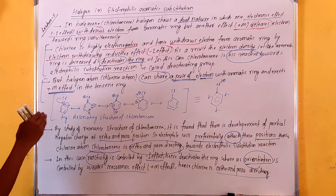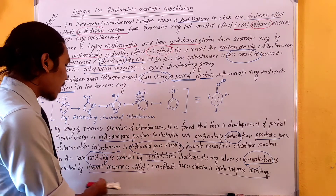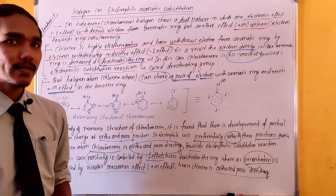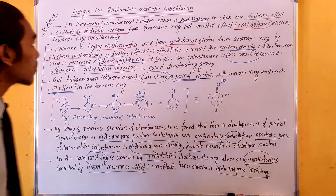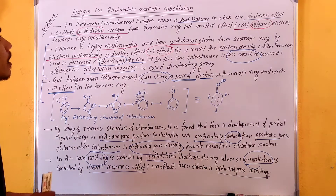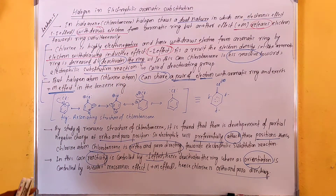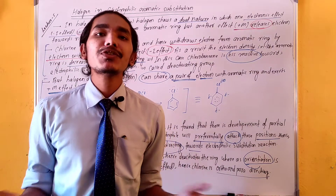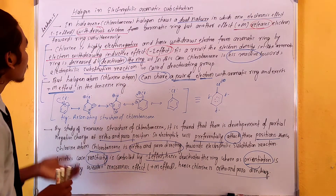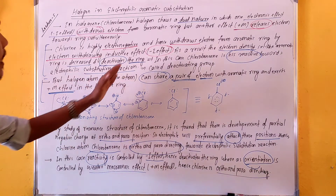In halogen atoms, there are electronic effects that affect ring stability and reactivity. Chlorine is highly electronegative and hence withdraws electrons via the minus I effect, deactivating the ring. This is what we need to understand about the activating and deactivating groups.